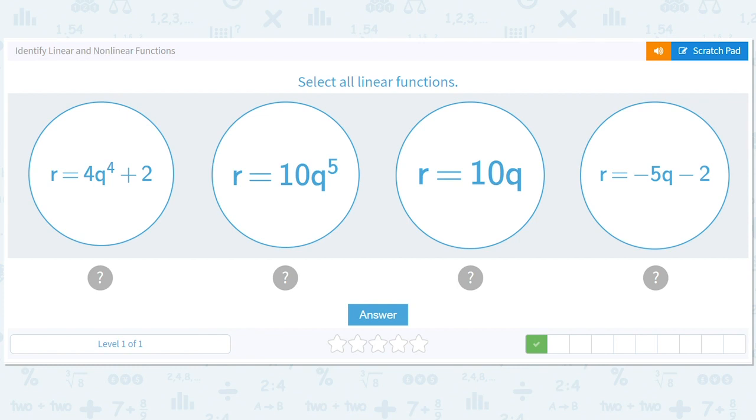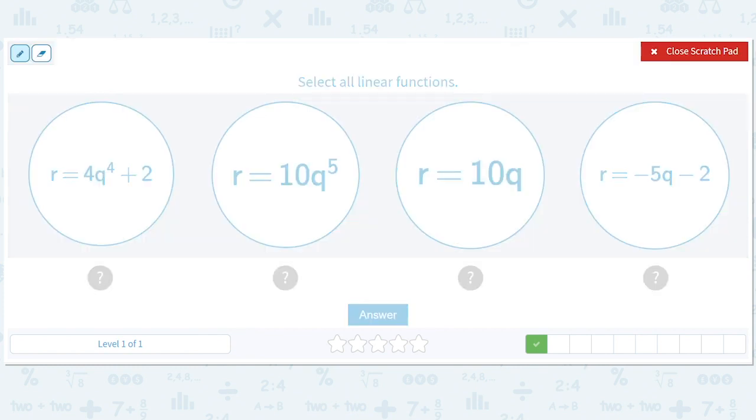Okay, select all linear functions. Well, that's got a fourth, that's got a fifth. This actually is linear because it's y equals mx plus zero, and that's linear too, y equals mx plus negative two or whatever. So these two are linear.